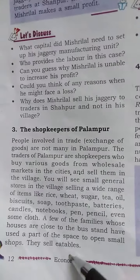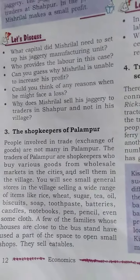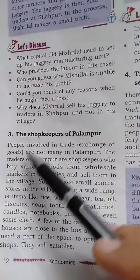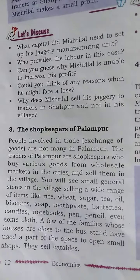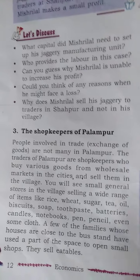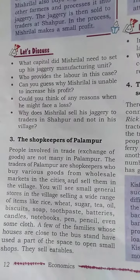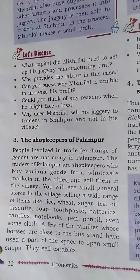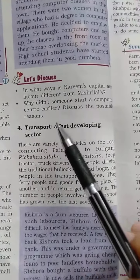Some families used part of their house space to open small shops near the bus stand, selling eatables like chips and cold drinks. Shop keepers buy various goods from wholesale markets in the cities and sell them near the bus stand, opening a shop so people can buy eatables from them — this was their source of earning.